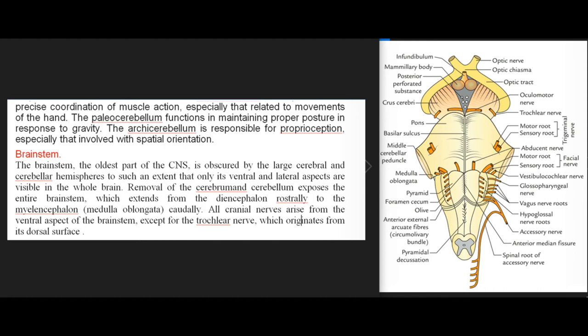The brainstem, the oldest part of the CNS, is obscured by the large cerebral and cerebellar hemispheres such that only its ventral and lateral aspects are visible in the whole brain. Removal of the cerebrum and cerebellum exposes the entire brainstem, which extends from the diencephalon rostrally to the myelencephalon (medulla oblongata) caudally. All cranial nerves arise from the ventral aspect of the brainstem, except for the trochlear nerve, which originates from its dorsal surface.